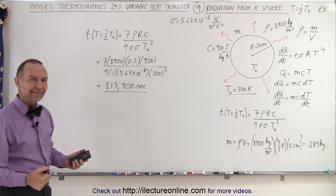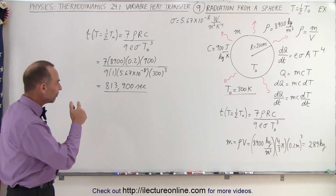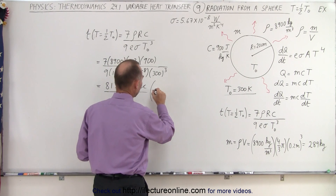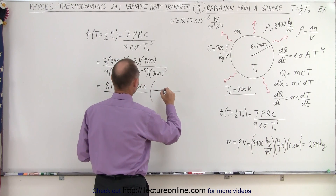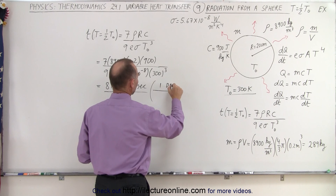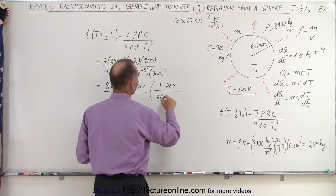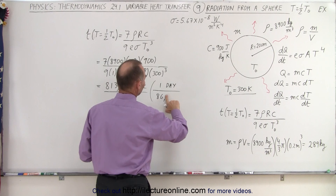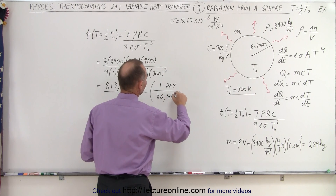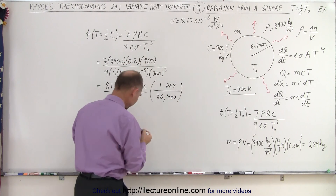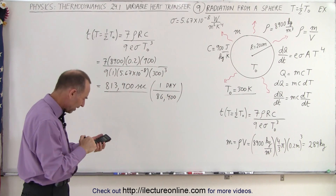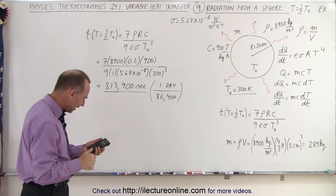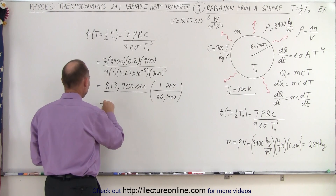Well, let's see how many days that is. If you divide by 86,400 — because that's the number of seconds in a day — divide by 86,400, we get 9.4 days.